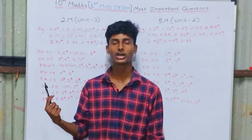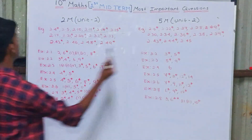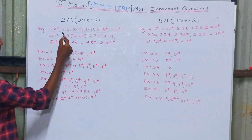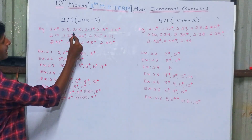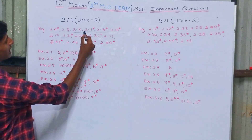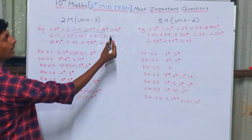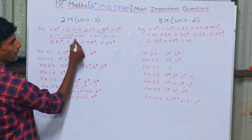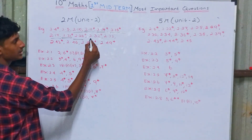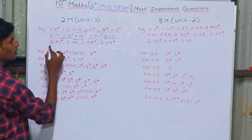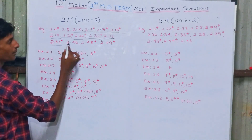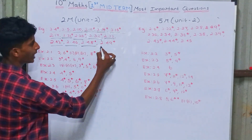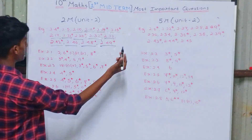Unit 2 important questions. Examples for two marks: 2.4 (very important), 2.5, 2.10, 2.11 (very important), 2.14 (very important), 2.15 and 2.17, 2.21, 2.26, 2.32, 2.33, 2.42 (very important), 2.46 important, 2.48 (very important), 2.49 (very important).